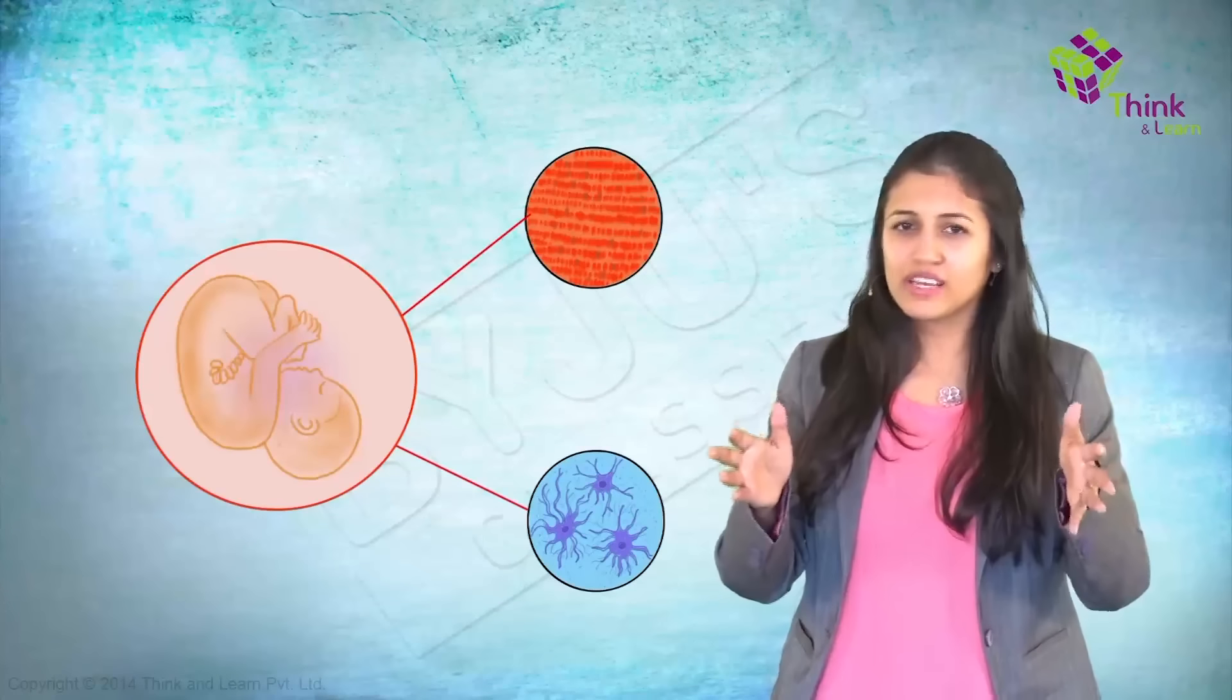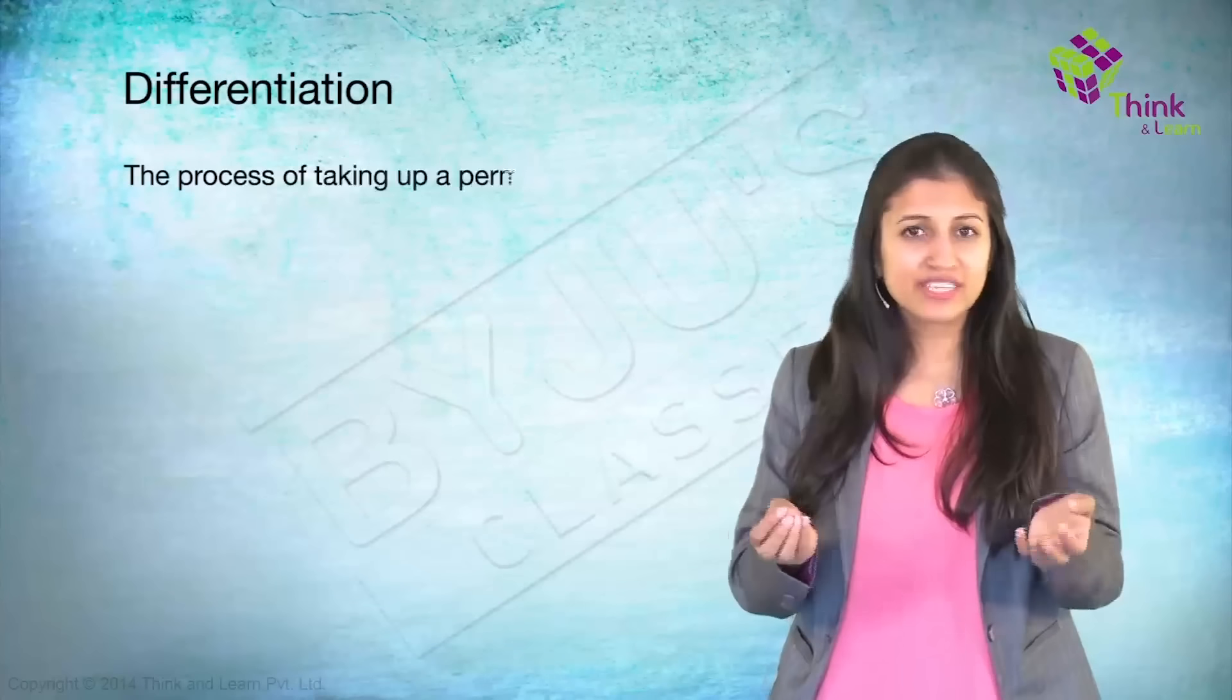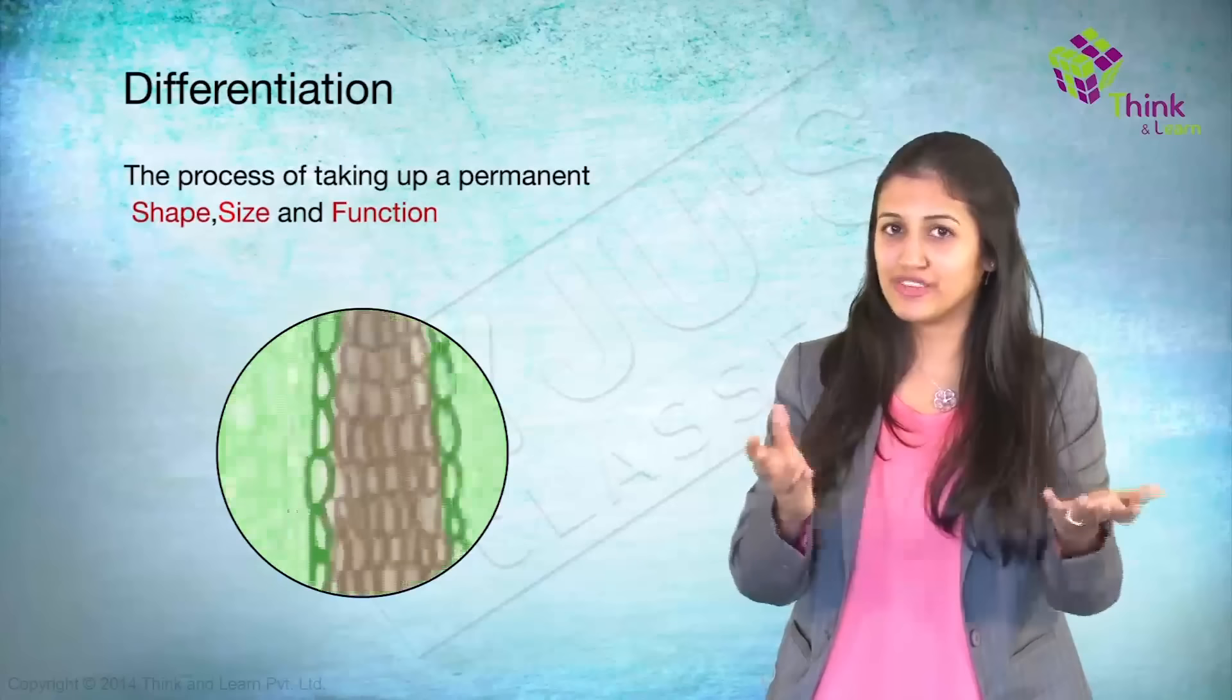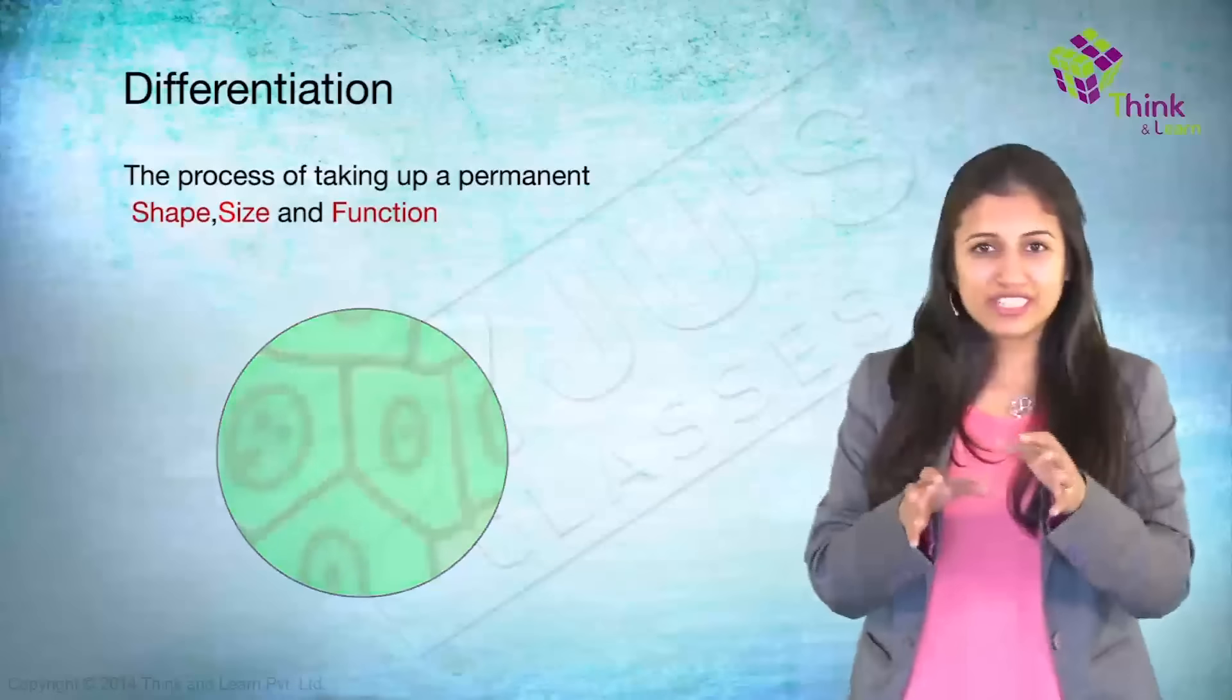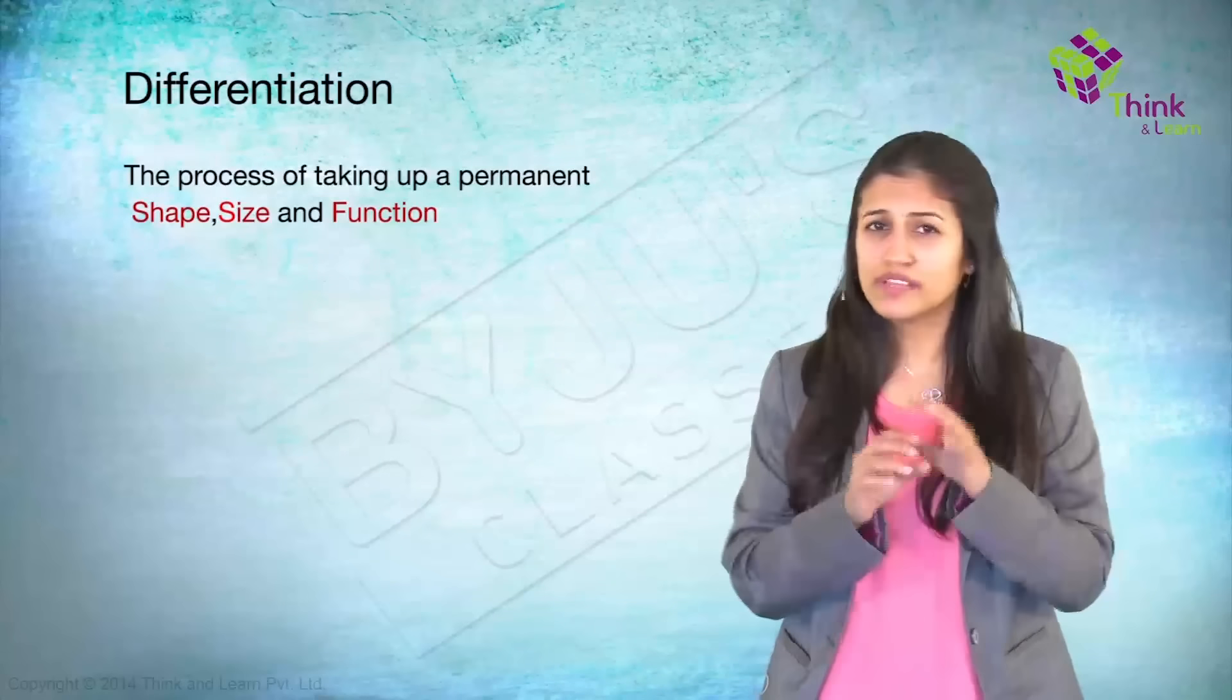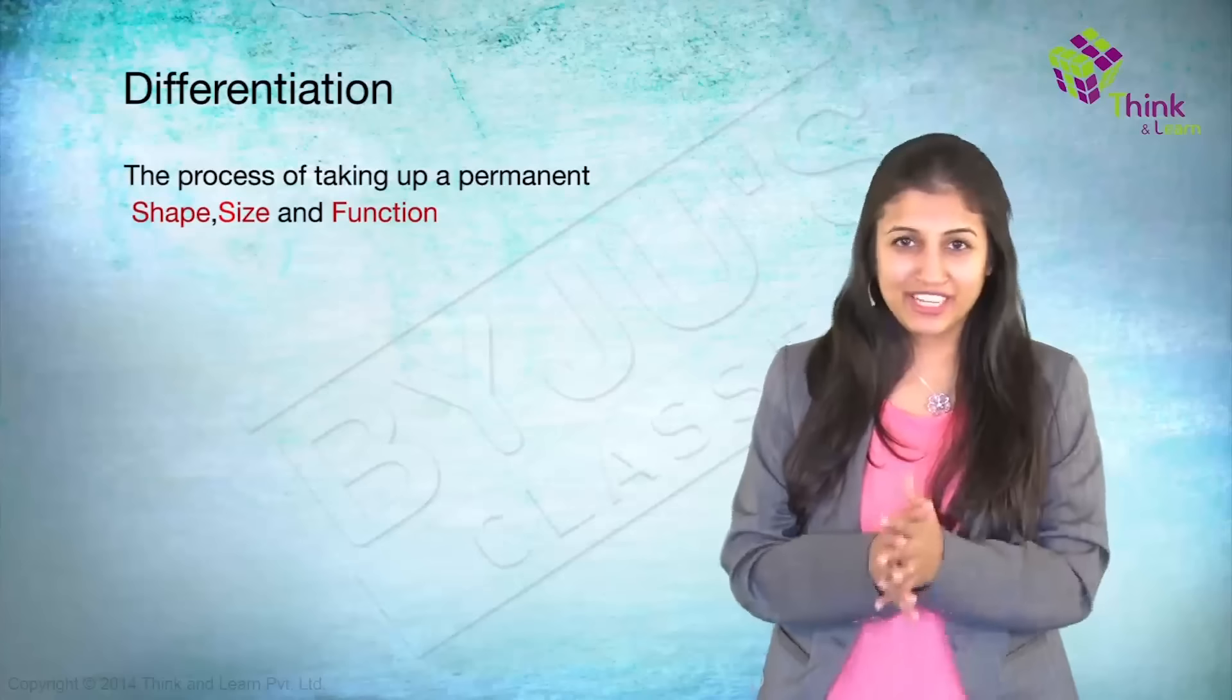So in one line, what is differentiation? The process of taking up a permanent shape, size and a function is differentiation. Okay, now the differentiation is very clear to you. Let's get back and understand the two other important types of meristematic tissue.